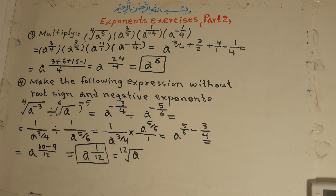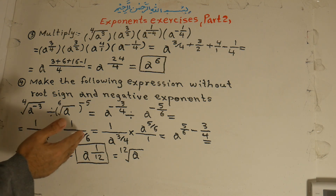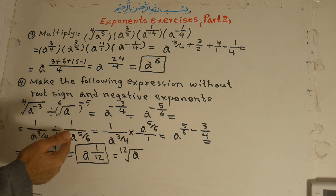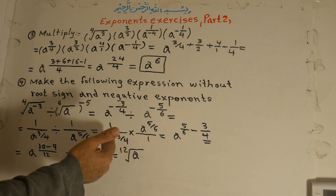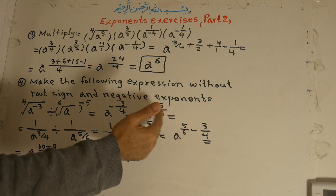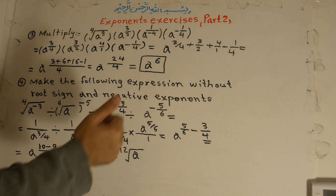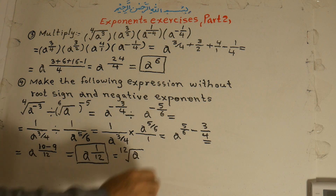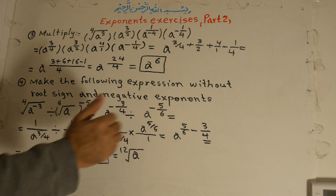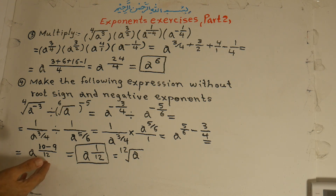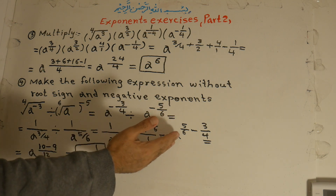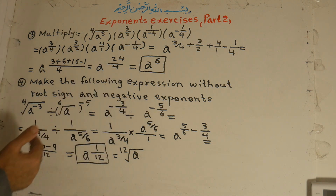The first fraction remains in the same position: 1 over a to the power of 3 over 4. The division sign changes to multiplication, and the second one becomes inverse — the denominator goes to the numerator. A to the power of 5 over 6 over 1. Now we multiply: 5 over 6 minus 3 over 4. The common denominator between 6 and 4 is 12. 12 divided by 6 is 2, 2 times 5 is 10. 12 divided by 4 is 3, 3 times 3 is 9. A to the power of 10 minus 9 is 1 over 12. This is the answer.